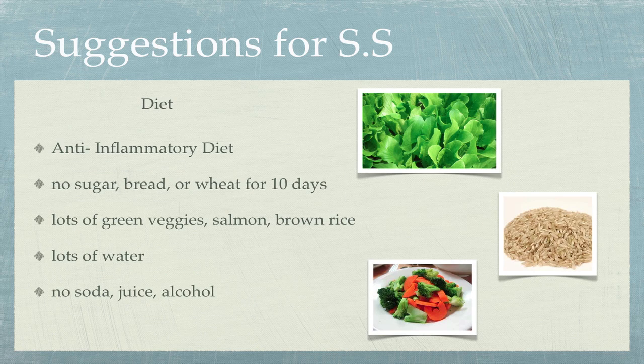When it comes to diet, there's a lot we could discuss, but I'd like you to focus on an anti-inflammatory approach. That mainly means eliminating sugar, bread, and wheat for 10 days — including cookies, muffins, pastries, and bread. Even good organic, fresh bakery bread is still inflammatory. If you can cut that out for 10 days, notice what kind of shift you see in pain levels and stress levels, because more inflammation in the body actually makes stress levels higher too.